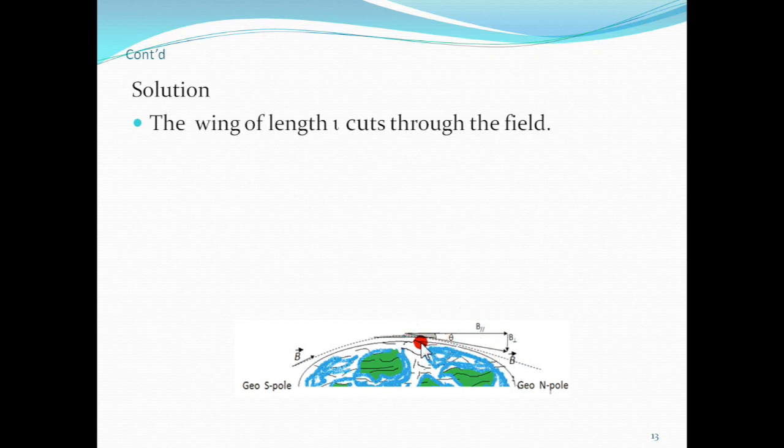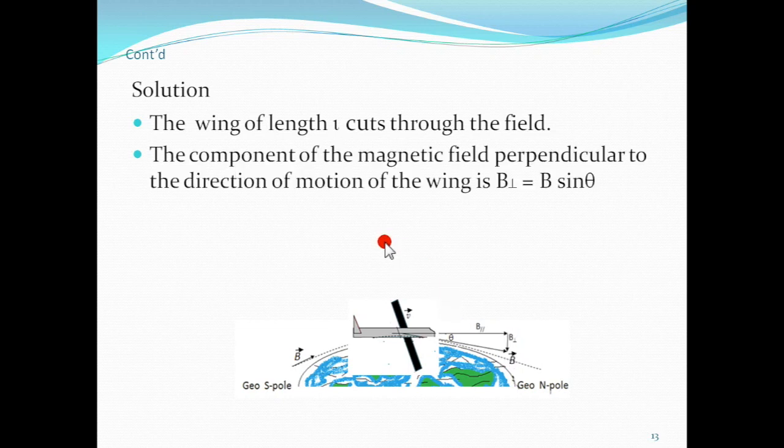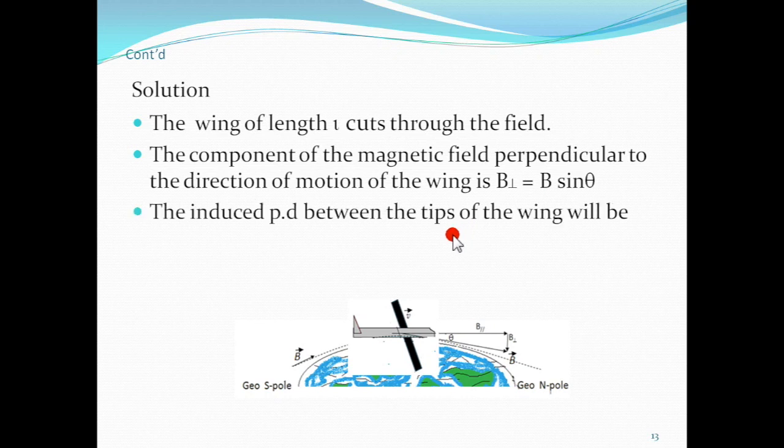The wing cuts through the magnetic field which has horizontal and vertical components. The perpendicular component is what produces the induced EMF. If B is parallel to V, sin 0 equals 0 and no EMF is induced. The component of the magnetic field perpendicular to the direction of motion of the wing is B sin theta. Therefore, the potential difference between the tip of the wing will be E equals B perpendicular times L V, which is B L V sine theta.